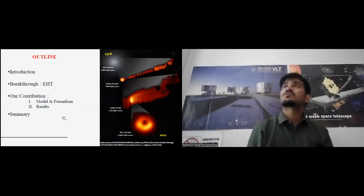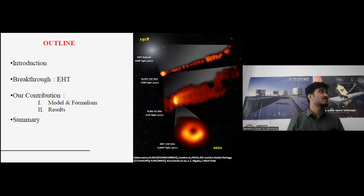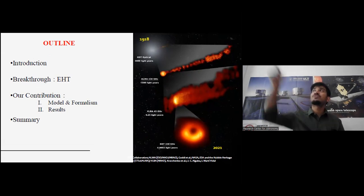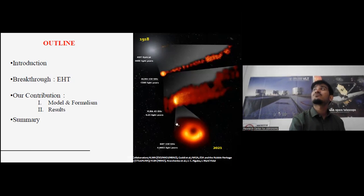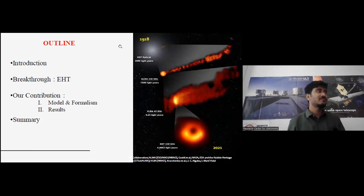This is a brief outline of my talk: how things started, then the breakthrough of EHT in 2019, what we can contribute with our model, the formalism we used, the results we obtained, and finally a summary. Back in 1918, just three years after Einstein discovered general relativity, Heber Curtis observed a curious narrow straight ray — that central luminous region is today's image of M87. The timeline is more than 100 years, and we thank EHT for giving us a better image.